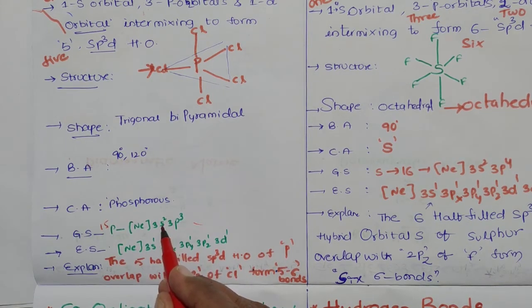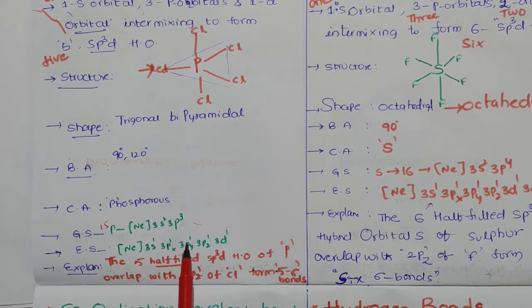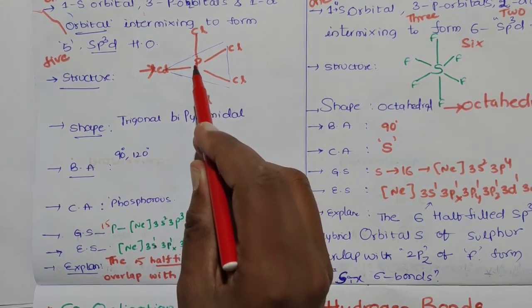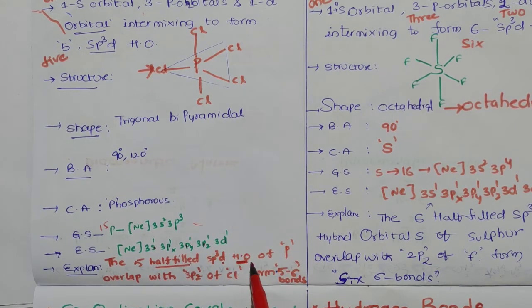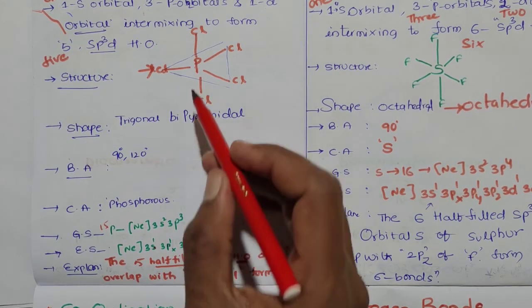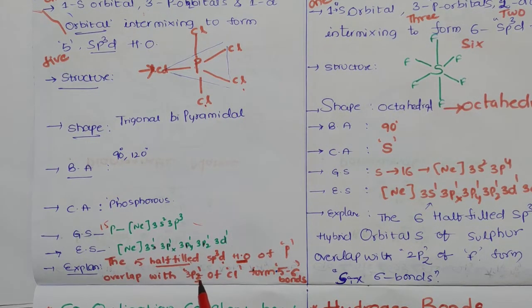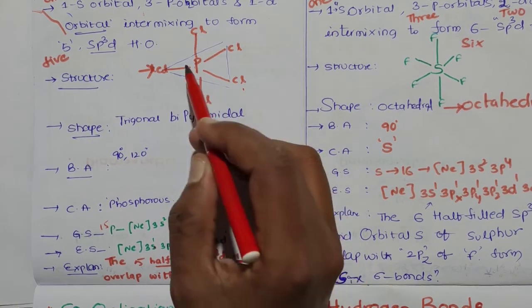In excited state, paired electrons become unpaired. The half-filled sp³d hybrid orbitals of phosphorus overlap with three pz orbitals of chlorine to form five sigma bonds.